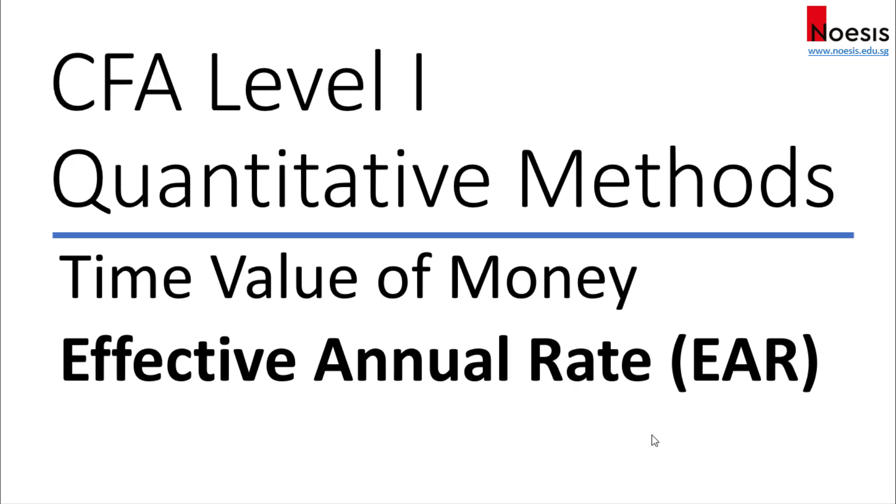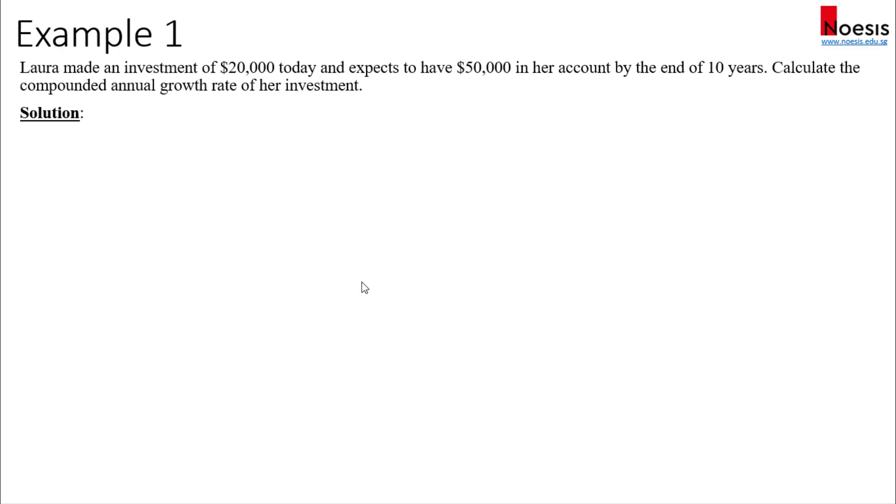In this video we'll be looking at the effective annual rate, or in short we call it EAR. So let's say Laura made an investment of $20,000 today and expects to have $50,000 in her account by the end of 10 years. Calculate the compounded annual growth rate of her investment.